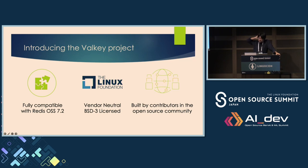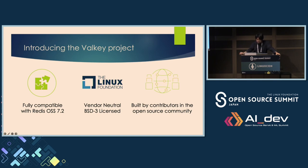The third principle is that Valkey is built by contributors and the open source community. Our technical decisions and roadmaps are shaped collaboratively by developers who understand real-world use cases and needs of infrastructure software. This ensures the project serves the broader technology ecosystem through transparent and collaborative development. These three pillars — Redis compatibility, neutral licensing, and community-driven development — form the foundation addressing key concerns about the sustainability and governance of critical infrastructure software.